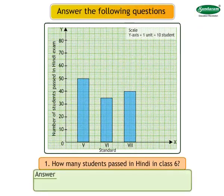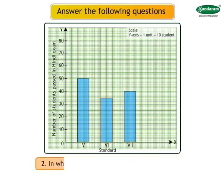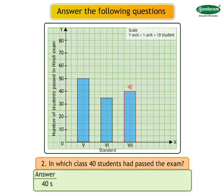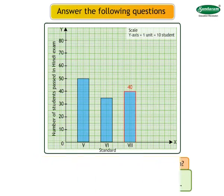Answer: 35 students passed in class 6. Number 2: In which class did 40 students pass the exam? Answer: 40 students of 7th standard have passed the exam.